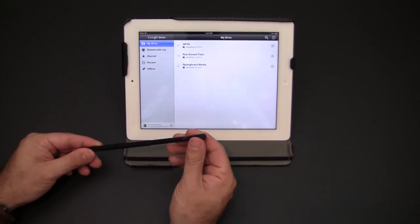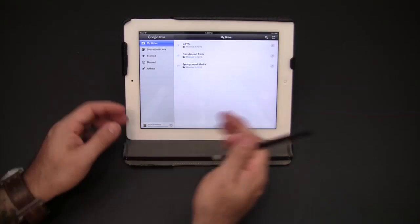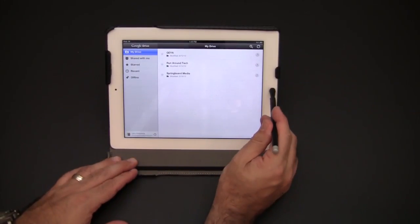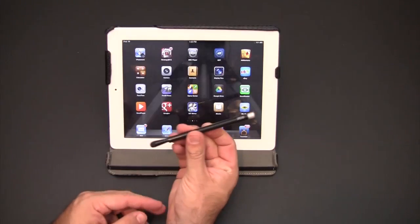When I'm all done, collapse it back together, right back to the normal stylus length and I'm good to go. Ready to store it back in my gear bag.